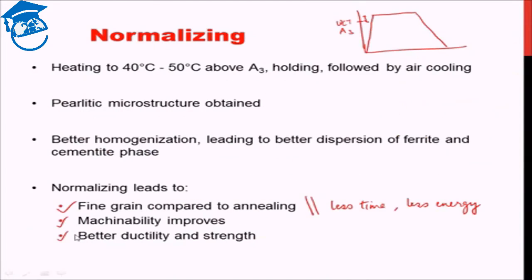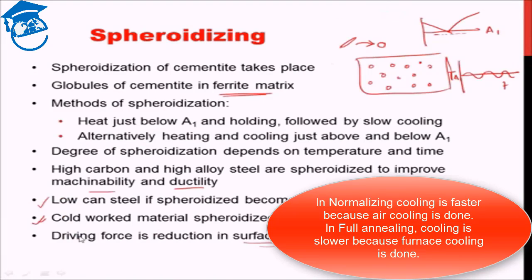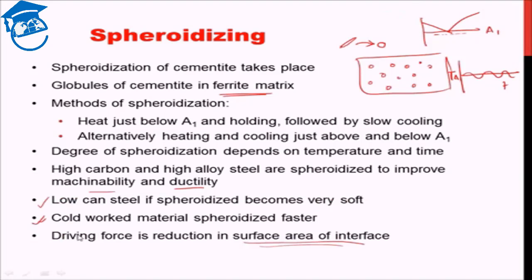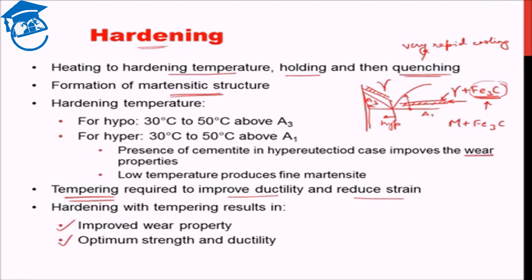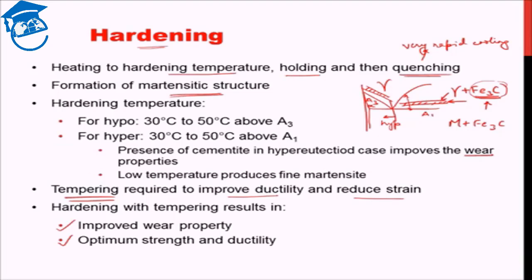To summarize today's lecture: we saw normalizing, which is similar to full annealing except that it is air cooled; we saw spheroidizing, in which we convert cementite into spherical particles thereby improving machinability; and we saw the hardening process, which is used to produce a very strong martensitic structure. I'll catch up with you in the next lecture and discuss some additional heat treatment processes. Till then, have a great day. Goodbye.